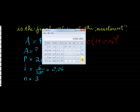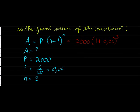And we're going to round to two decimal places. That just makes sense when working with money. 2,382.3 cents. 2,382 Rand and 3 cents. That's how much it would be worth in 3 years.